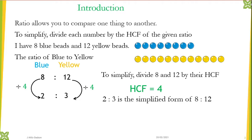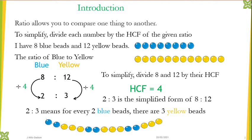So 2 is to 3 is the simplified form of 8 is to 12. What that means is that you can rearrange the beads in the form that for every two blue beads there are three yellow beads. As you can see, the same beads have been rearranged in the format of the simplified form of the ratio.